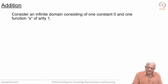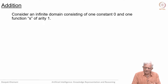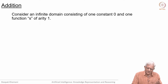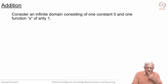Consider an infinite domain consisting of one constant called 0 and one successor function of arity 1. It takes any element from this domain and gives us another element which is the next number. So you start with 0, you get 1; you start with 1, you get 2 and so on — which is the foundation of the first principle of mathematical induction.